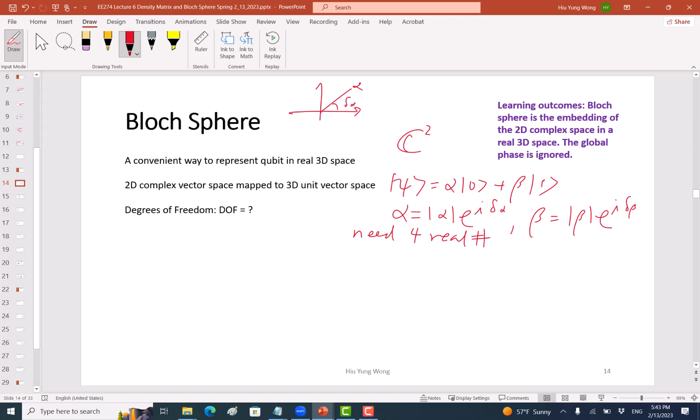But however, the good thing about quantum computing is this. They need to be normalized. Psi inner product with psi equal to one. This gives us one equation, so the degrees of freedom reduced to three real numbers. Because this is a constraint, this four number needs to have this relationship. I only need three real numbers.